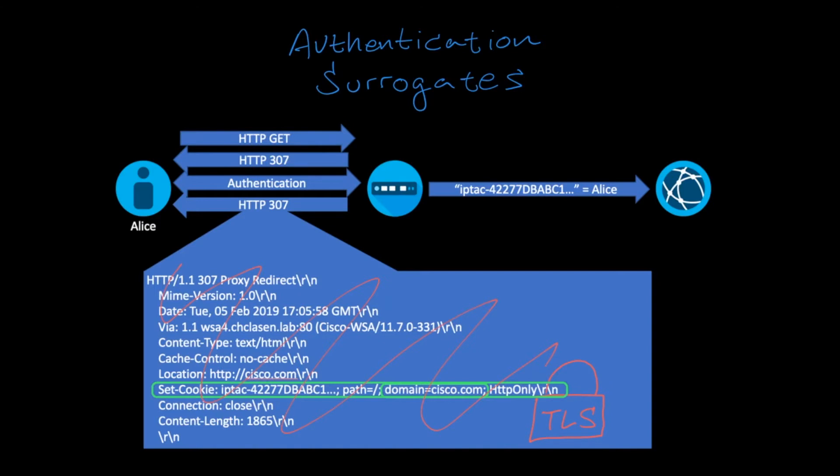In order to enforce this for cookie surrogates, every request would need to be decrypted to check for the presence of a cookie. The source and destination IP address are not encrypted and thus it is useful to check this against a list of authenticated users and only decrypt to authenticate if the IP is not mapped to a known user.